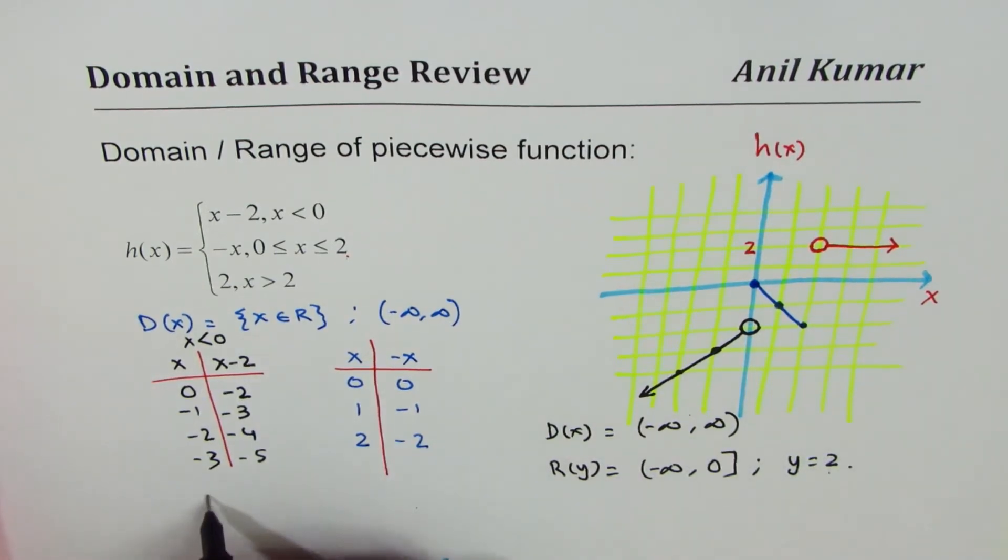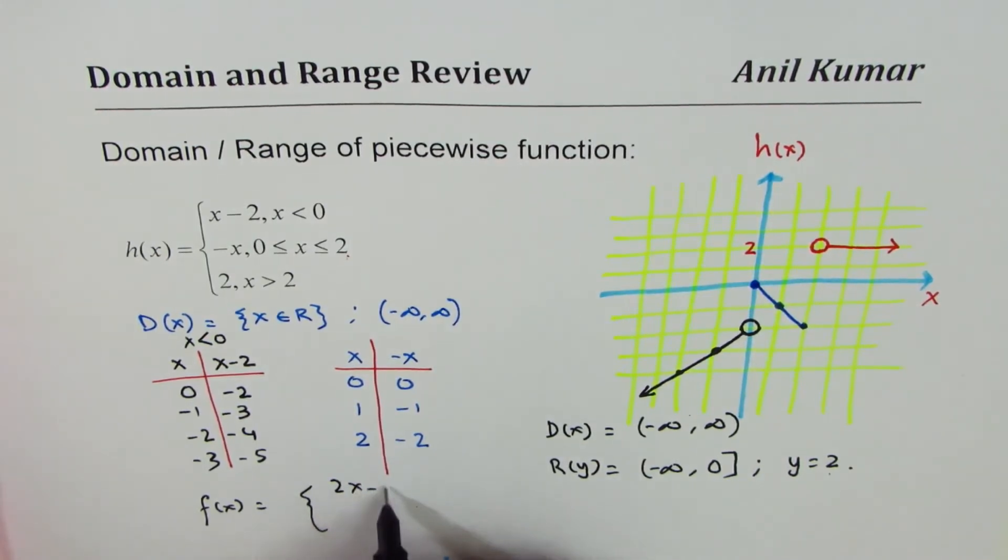I hope that helps. As an exercise you can do another question which is, you could write another function as f(x) equal to x, as x equal to 2, x minus 1, and x equal to x square for x less than 1.